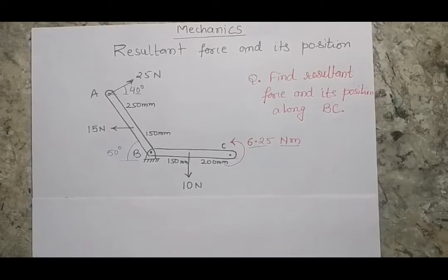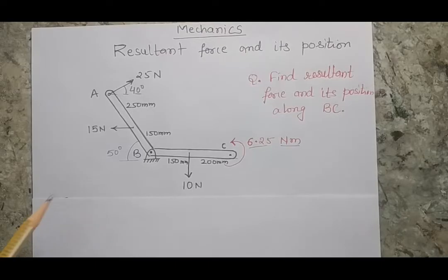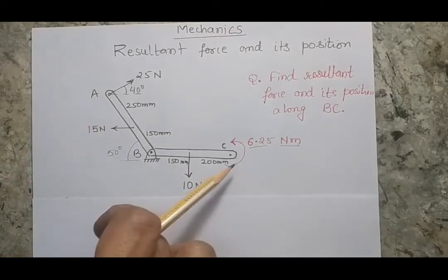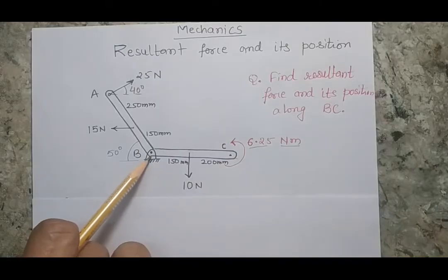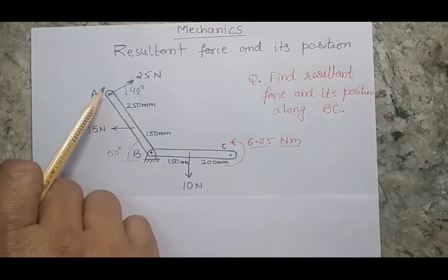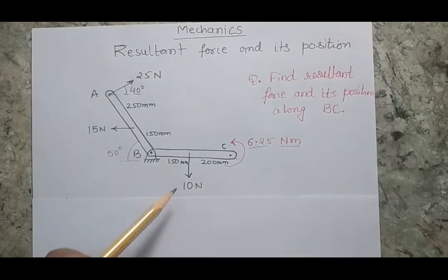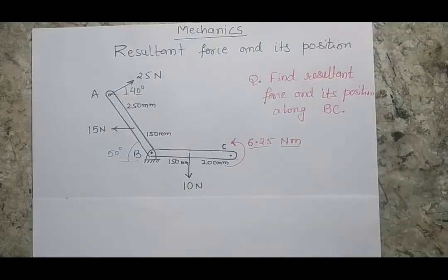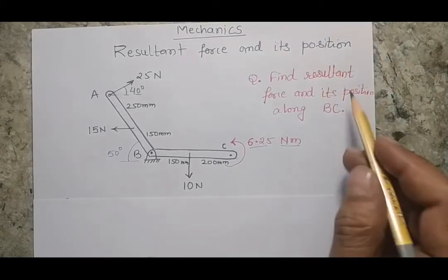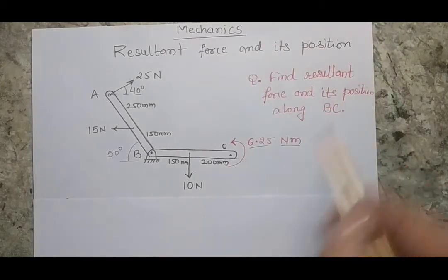Hello and welcome again. In this session we will try to solve a problem of a rigid body on which multiple forces are acting. If you look at this picture, this is a bent body A, B and C where B is a pin joint, and there are multiple forces: 25, 15, 10, and a couple of magnitude 6.25. The question asks that you have to find the resultant force and the position of the resultant force.